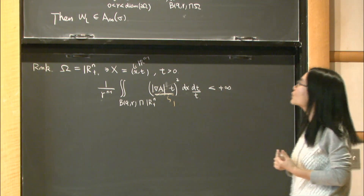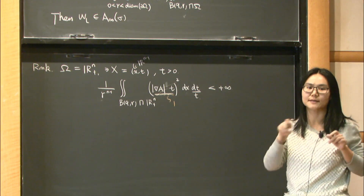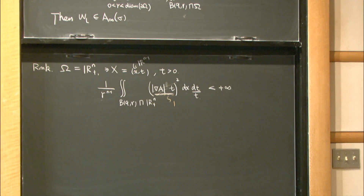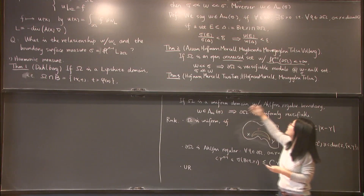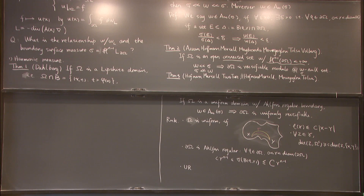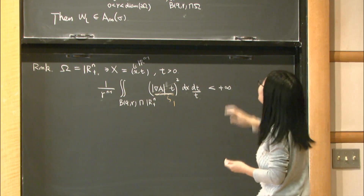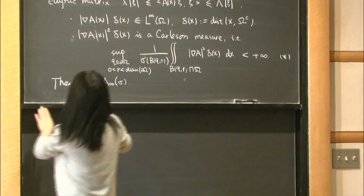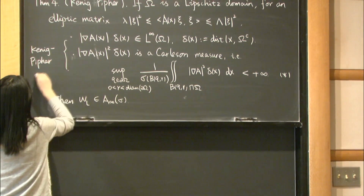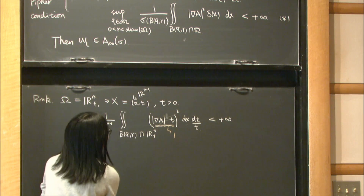The goal of our work was to determine whether elliptic measure distinguishes between rectifiable and purely unrectifiable boundaries — just as harmonic measure does in Theorems 2 and 3. If the elliptic measure has nice behavior, can we conclude the boundary is rectifiable? What we showed can be thought of as a converse to the Kenig-Pipher theorem. For simplicity I will refer to their assumption as the Kenig-Pipher condition.